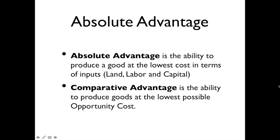There are two basic philosophies regarding interdependence and the gains from trade. The first philosophy comes from Adam Smith, the father of modern economics. When he wrote about trade, he talked in terms of absolute advantage — the country that has the ability to produce a good at the lowest possible cost in terms of land, labor, and capital should focus on producing that good.